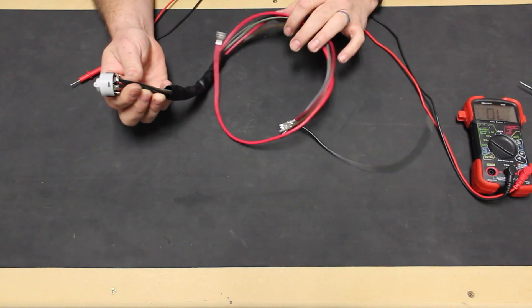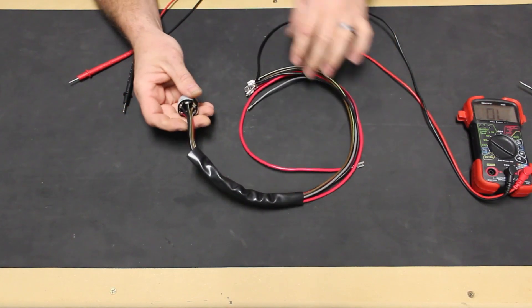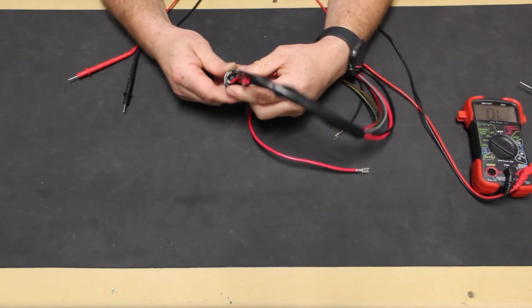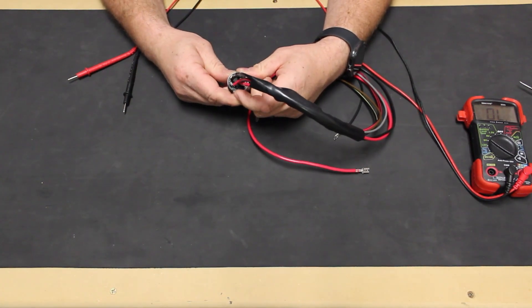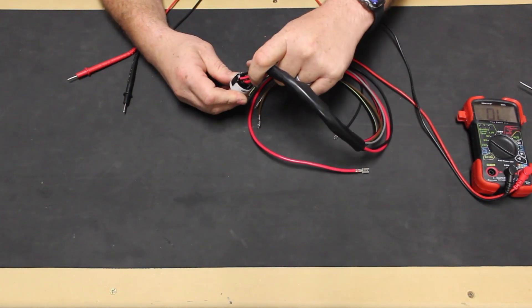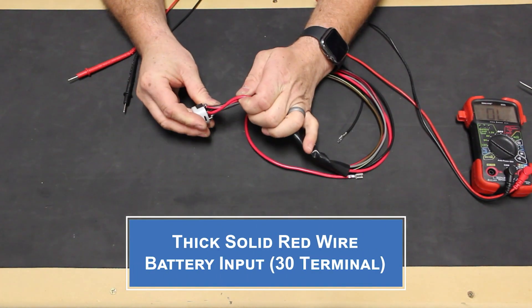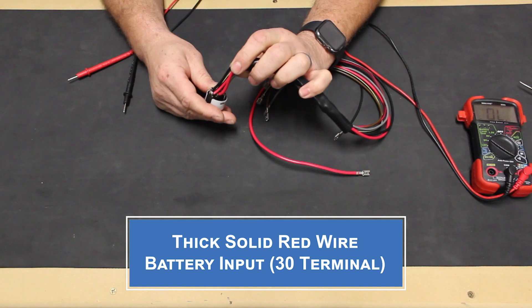Our 1971 ignition switch is a one-year only item, but there are three contacts on it that are the same for all VW air-cooled models. Some switches will have wire terminals, others will have built-in wires like ours here, but they all have a number 30 terminal for the battery input, which in our case is a thick red wire.